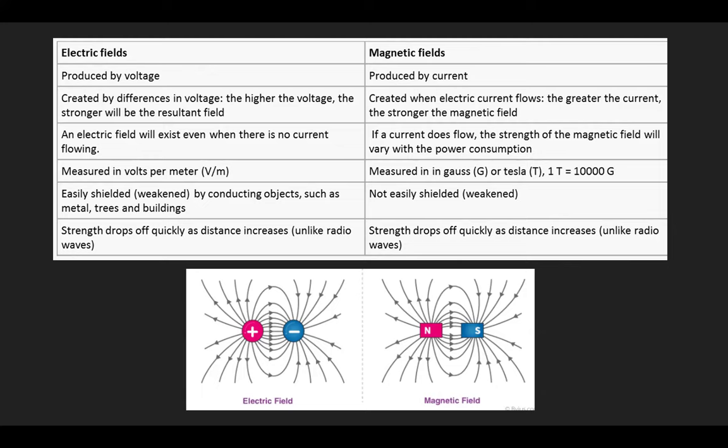An electric field exists any time you have voltage — even if there's no current flowing. That's why electricity is dangerous even when it's not actively running. Electric fields are measured in volts per meter, which makes sense because it's voltage over distance — the greater the voltage over a greater distance, the stronger the electric field.